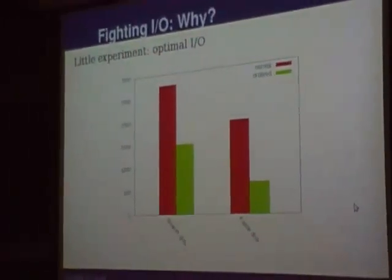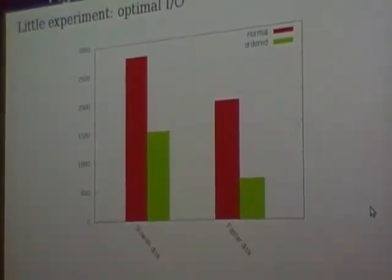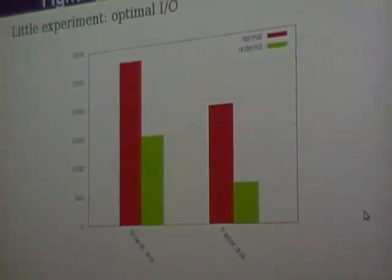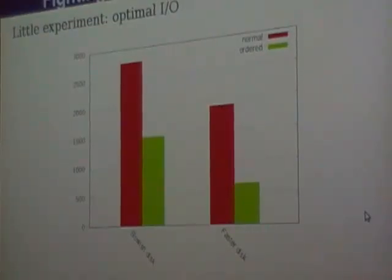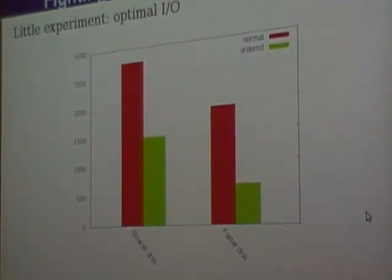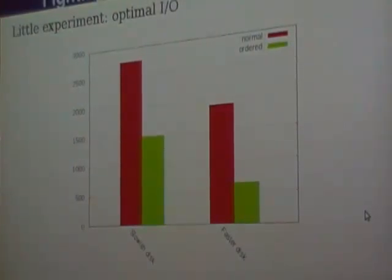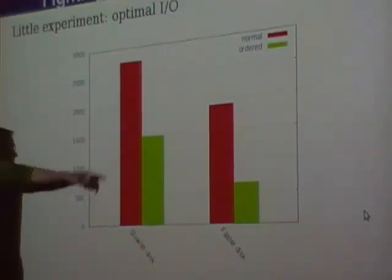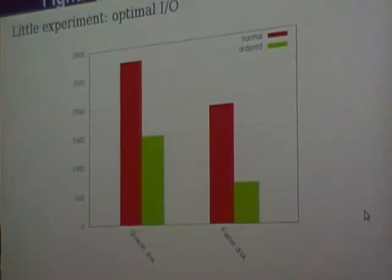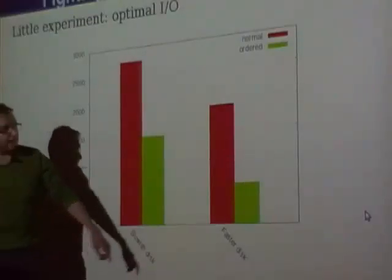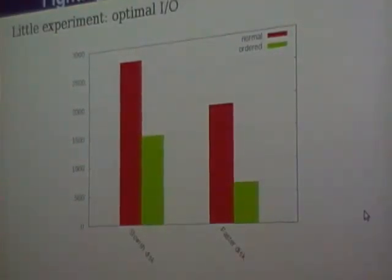I did a little experiment with the data I gathered. Instead of taking the I/O as it was, I also re-ordered it to see the difference. On a slowish disk with only 30 megabytes per second throughput, the normal I/O takes around 2.7 seconds. With ordered I/O it takes half the time. On a faster disk around 85 megabytes per second, the ordered I/O is 3 times faster. So it's really critical to avoid any seek on the disk.